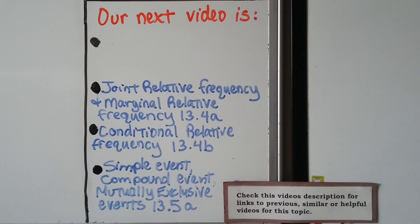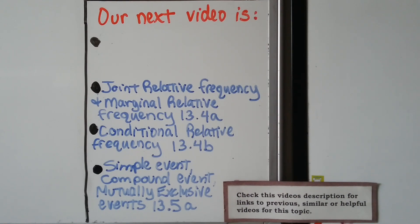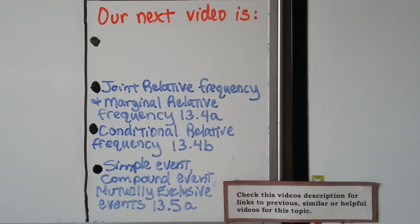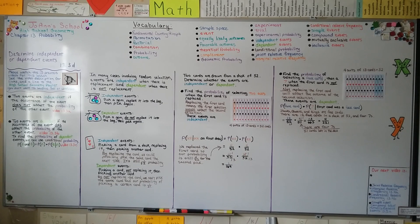We're going to move on to 13.4, which is split into A and B. We'll talk about joint relative frequency, marginal relative frequency, and then conditional relative frequency, before moving on to simple events, compound events, and mutually exclusive events. This entire chapter 13 was all about probability. If you need more help, click on the description to watch any previous videos you missed — the entire high school geometry playlist is linked there. Hope you're doing well, have a wonderful day, and I'll see you next time. Bye.